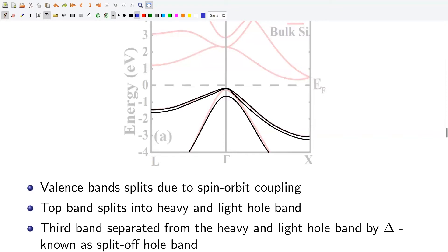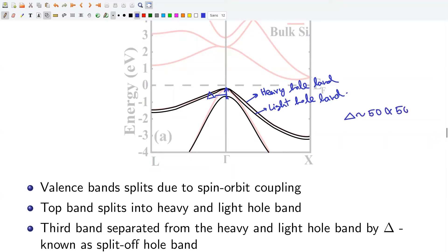The top band splits into two bands: the heavy hole band and the light hole band. The third band is now separated from the heavy and light hole bands at the gamma point by an energy delta. Delta is approximately between 50 and 500 milli-electron volts in different semiconductors. This third band is known as the split-off band.